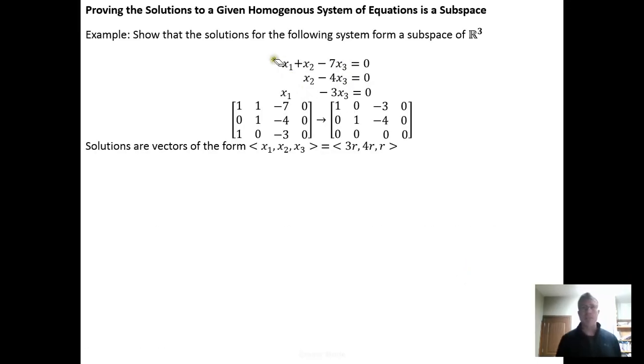So here's the system: x1 plus x2 minus 7x3 equals zero, x2 minus 4x3 equals zero, and x1 minus 3x3 equals zero. So this is a homogeneous system, and we know how to solve a system of equations. We just put it into matrix form. So here's the coefficient matrix augmented with the zero vector, and we put that into reduced row echelon form and then interpret the result.